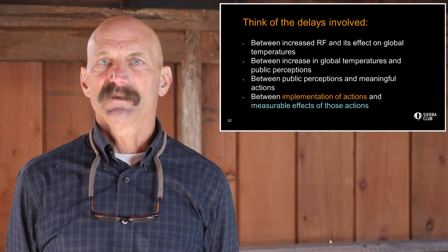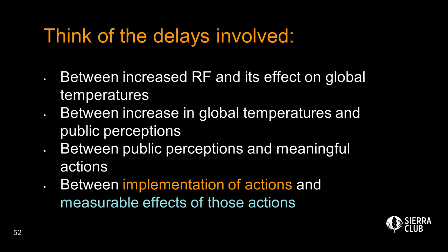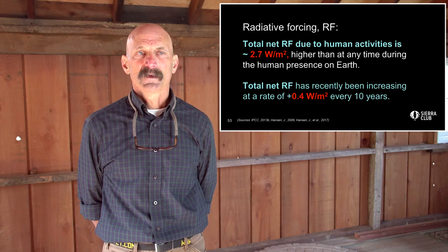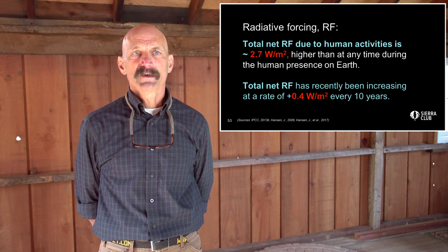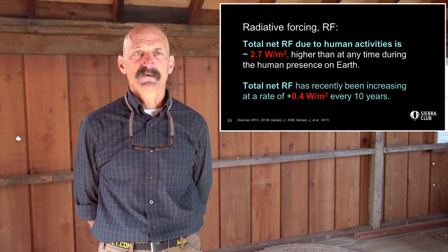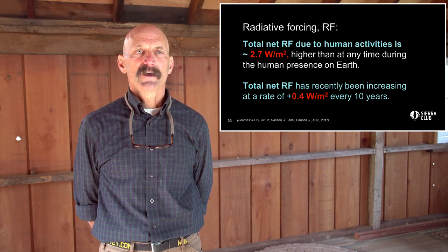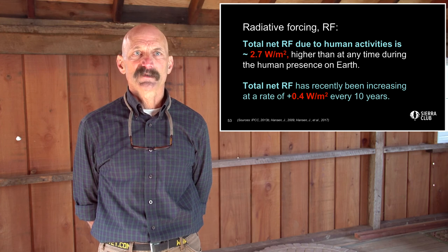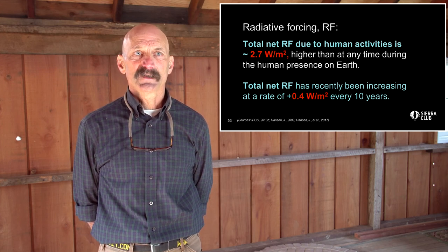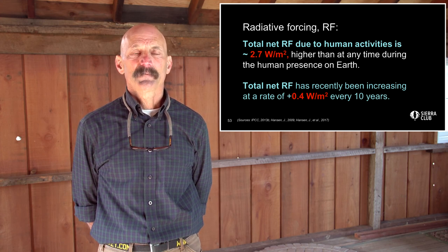Think for just a moment of the delays involved in this whole system: a delay between increased radiative forcing and its effect on global temperatures; a delay between increase in global temperatures and public perceptions; a delay between public perceptions and meaningful actions; and a delay between implementation of actions and measurable effects of those actions. As of today, the total net radiative forcing due to human activities is around 2.7 watts per square meter — higher than at any time during human presence on Earth, and higher than the Earth has seen since the Pliocene epoch, 3 million years ago.